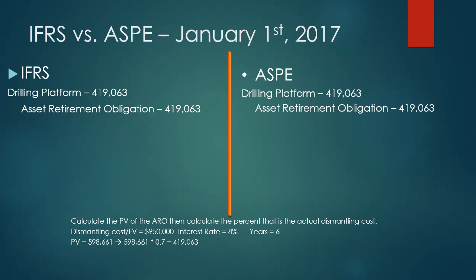Under both standards you debit drilling platform, because 70% of the value of the drilling platform is an asset the company can use, and credit asset retirement obligation, because that represents a liability the company needs to fulfill. So under both IFRS and ASPE: debit drilling platform, credit asset retirement obligation — same entry for both.